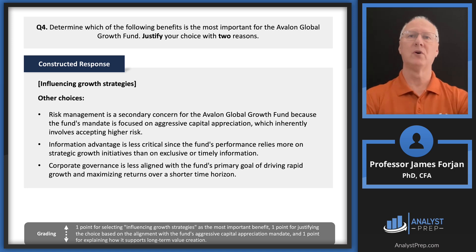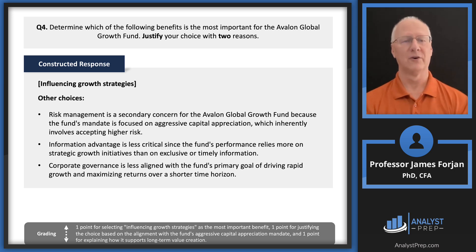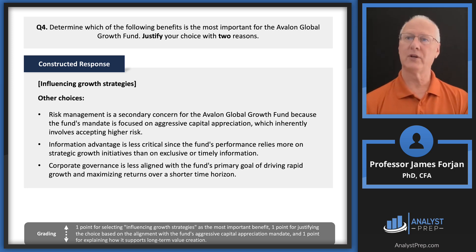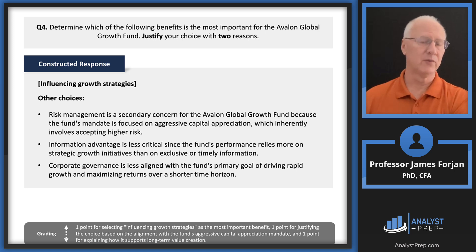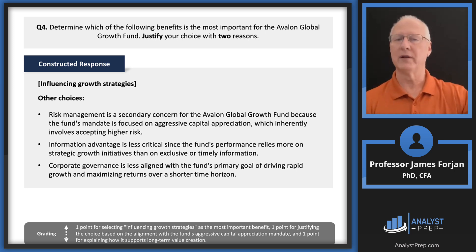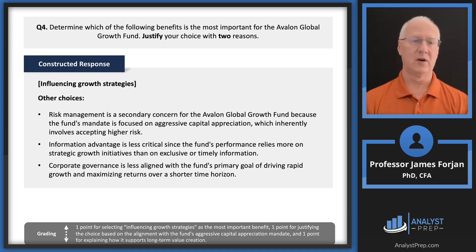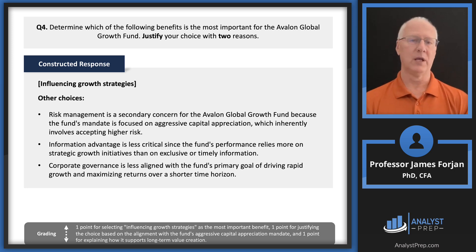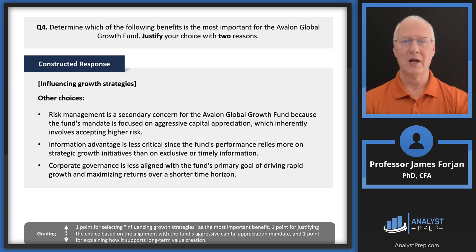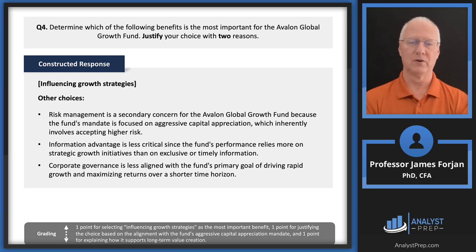Risk management is important, but if we're pursuing high growth, we can slip that into the shareholder meeting conversation — we want the firm to pursue high-risk, high-growth strategies while also managing that risk. Information advantage is also important for strategic growth initiatives but is secondary. On corporate governance, we want efficiency on the board of directors — highly qualified experts from diverse backgrounds who can each add value. It's a marginal cost-marginal benefit kind of deal.